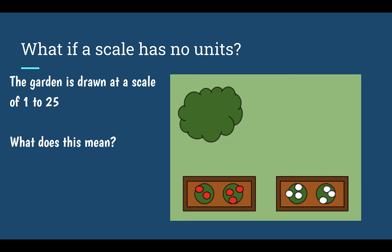So what if a scale has no units? For example we have this picture here. The garden is drawn at a scale of 1 to 25. There are no units. What does that mean? Well it just means that both parts of the scale have the exact same unit.